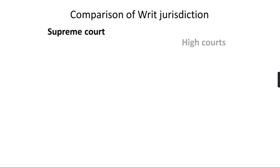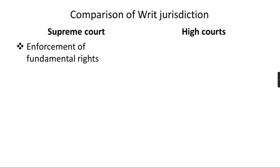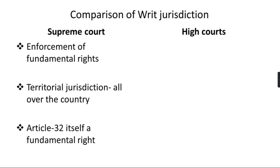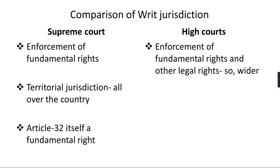Now let's compare the writ jurisdiction of High Courts and Supreme Courts. The Supreme Court can issue writs for the enforcement of fundamental rights only. Its territorial jurisdiction extends all over the entire country. Also, Article 32, which empowers the Supreme Court to issue writs, is itself a fundamental right.